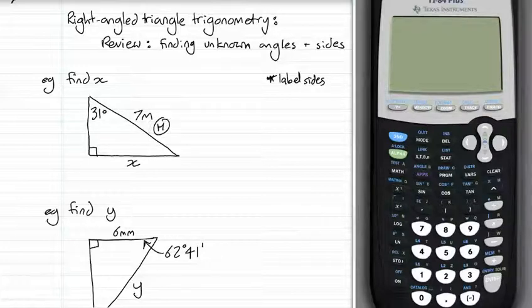The second step is always choose our ratio. The sides that I've got tell me which ratio I can use. If I've only got opposite and hypotenuse, I'm going to have to use sine.